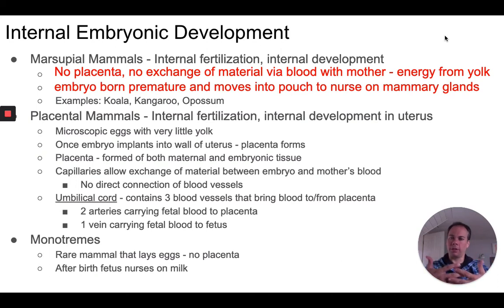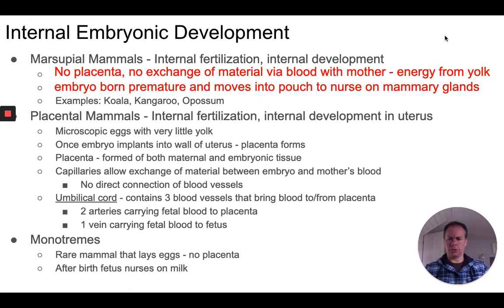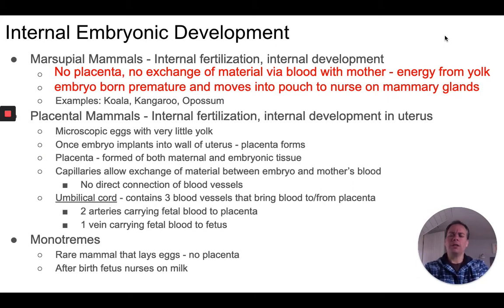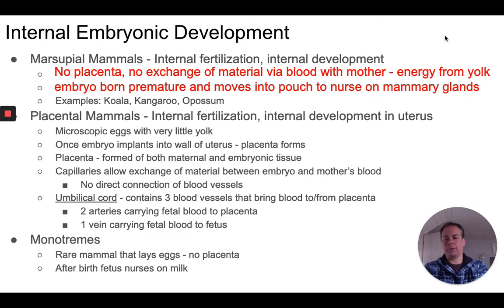In the placenta, oxygen in the mother's blood diffuses into the blood of the embryo. Nutrients in the mother's blood also diffuse into the embryo's blood. At the same time, waste products from the embryo — carbon dioxide and nitrogen waste — can diffuse in the opposite direction from the embryo's blood into the mother's blood, and she then excretes those materials by exhaling and through her kidneys. The umbilical cord is the connection between the embryo and the placenta — a tube containing blood vessels that carry blood back and forth.